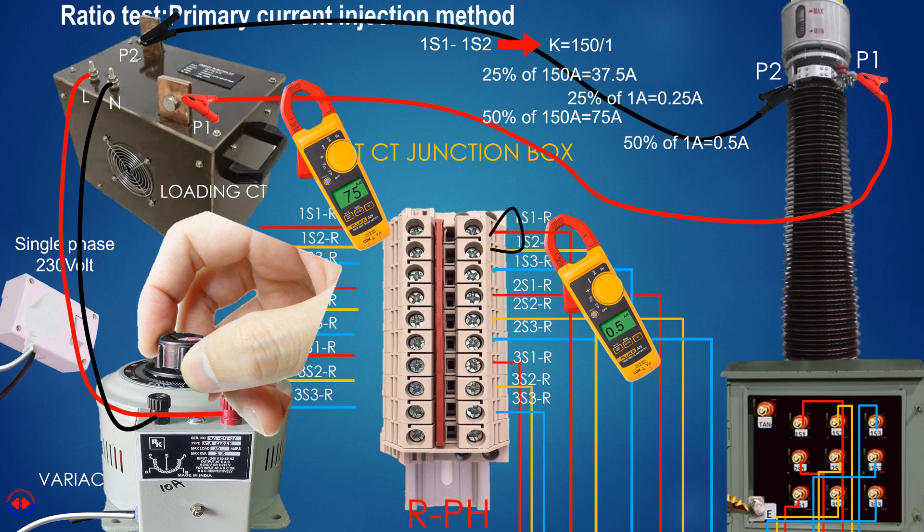Current injection to the CT may be increased up to rated current of the CT, but knee point voltage of the CT will be under consideration. All output values will be shown on clip-on meters and you should note these values for comparison and taking necessary action.